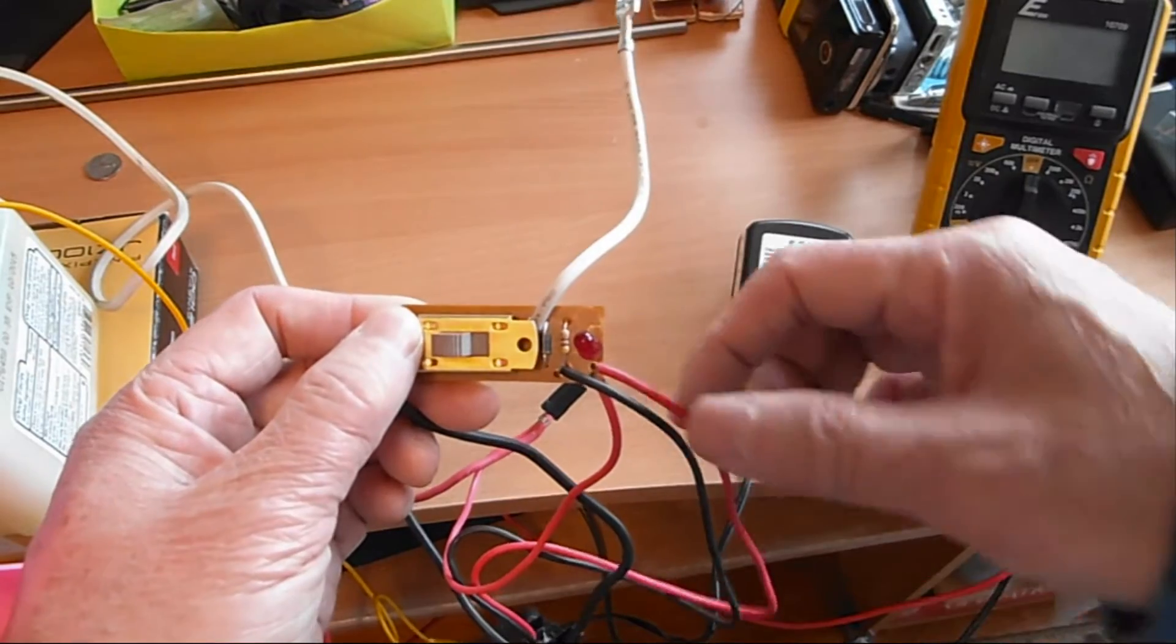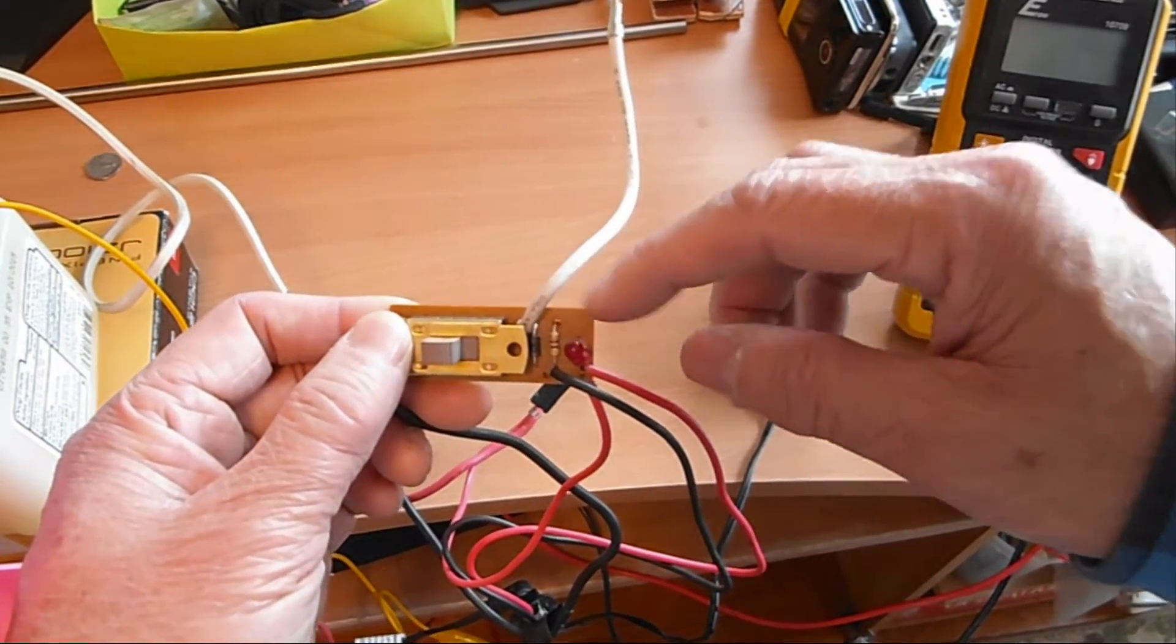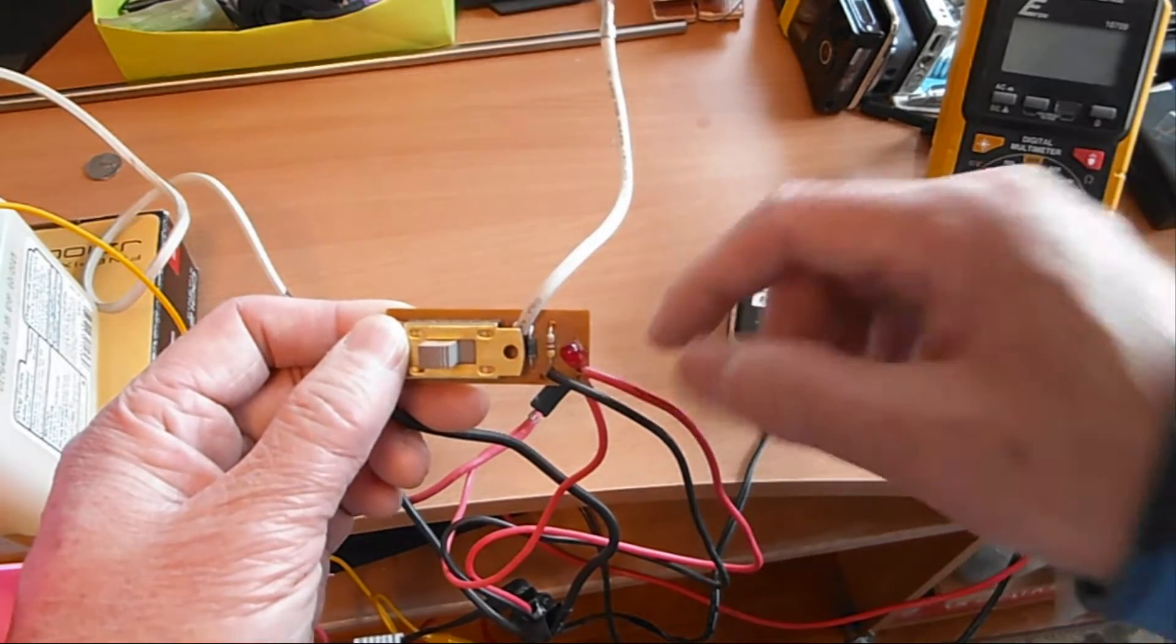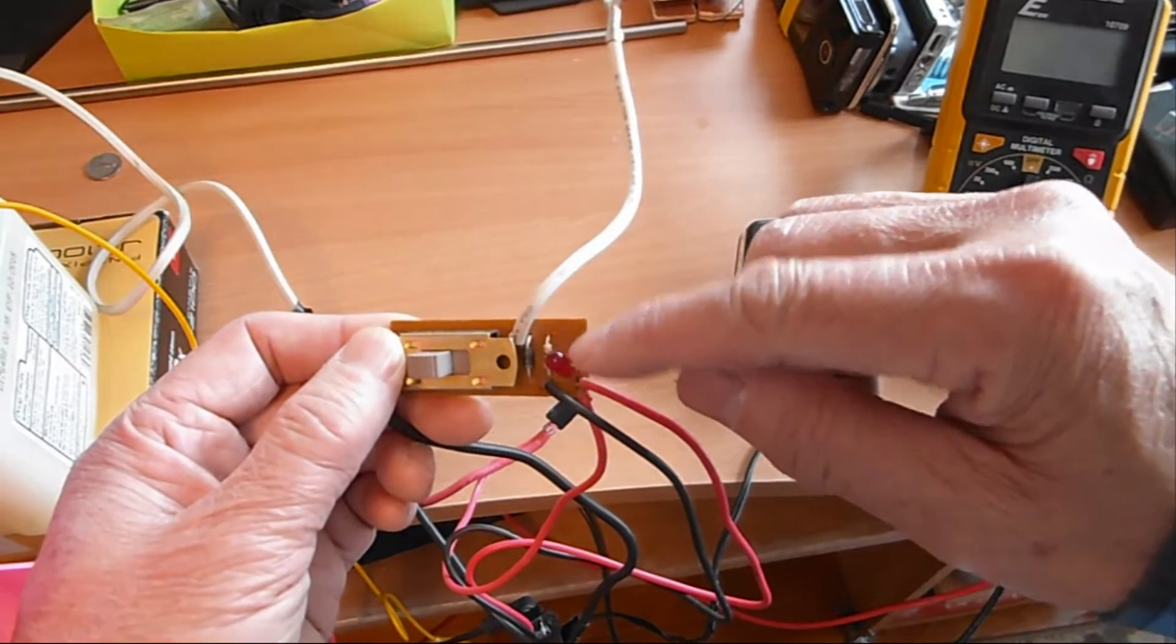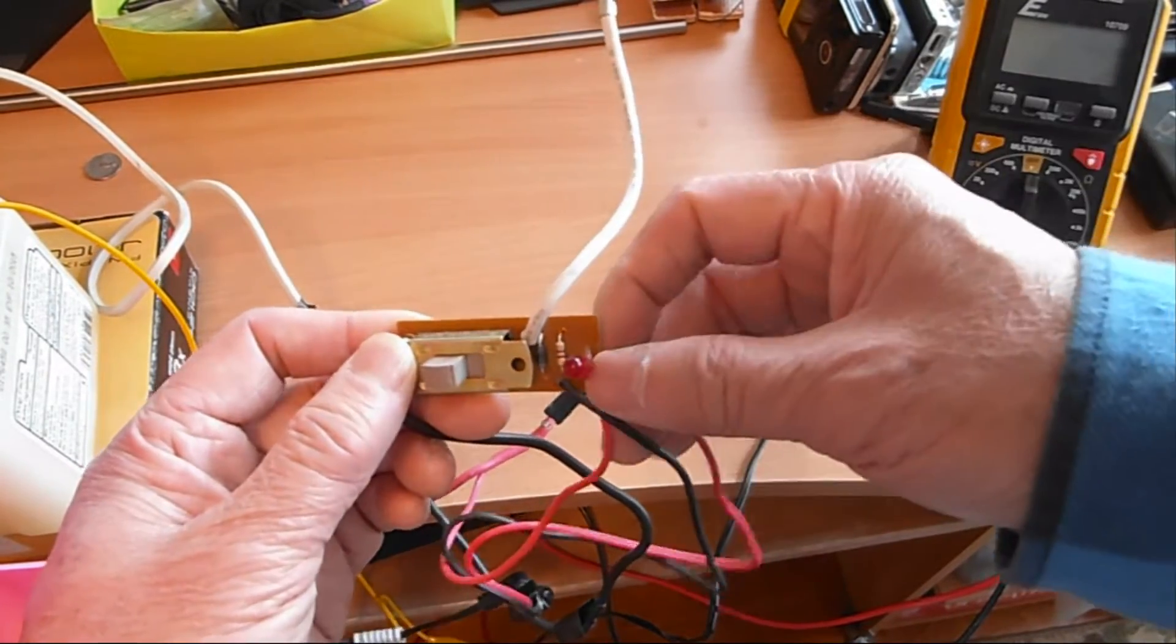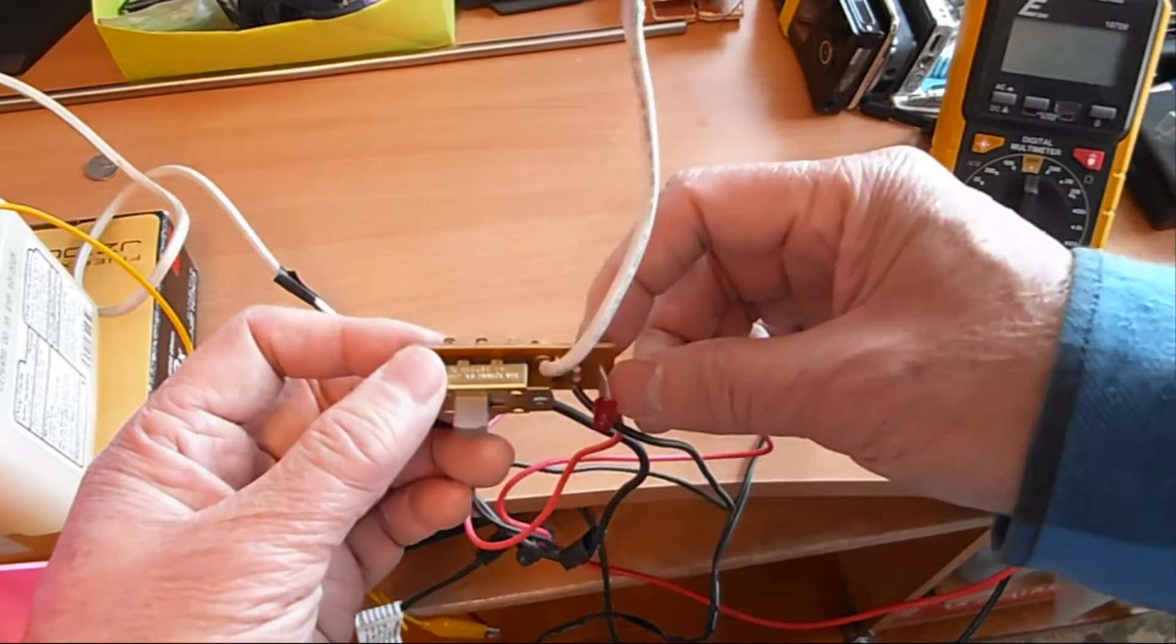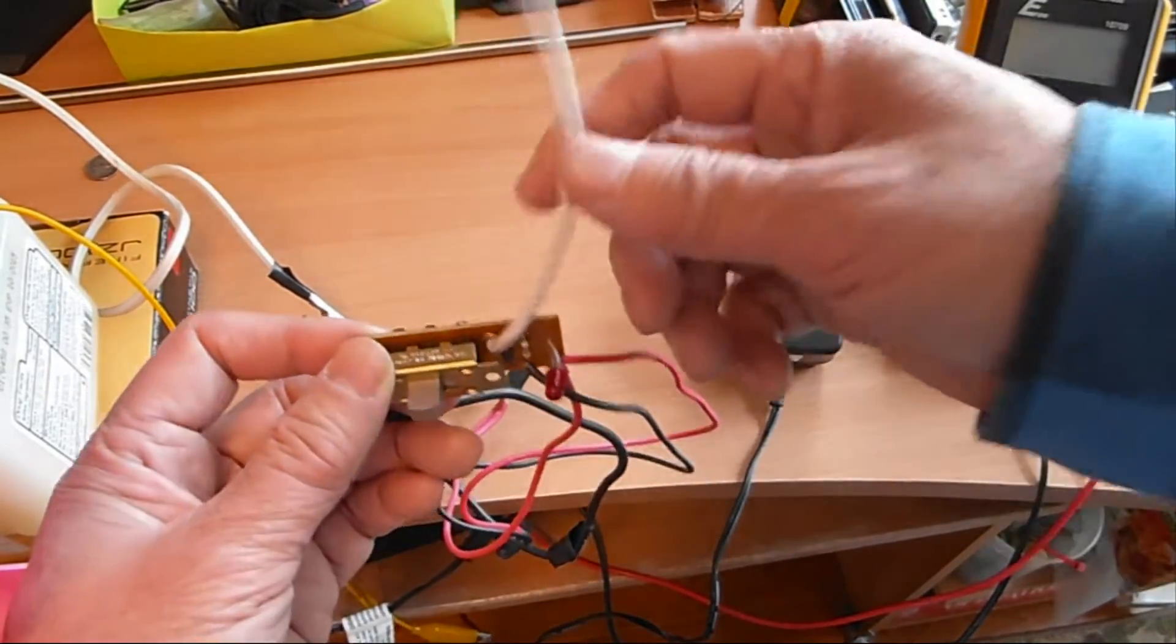I guess the resistor is to lower the voltage so it's under 3 volt so it can power the LED and also a diode here. I guess it's so the power from the battery won't go back up to the charger.